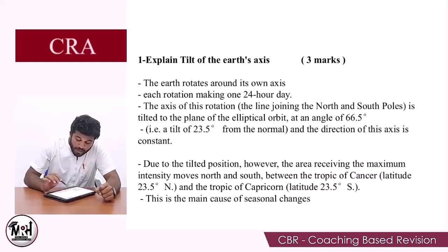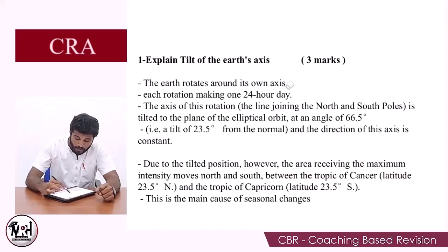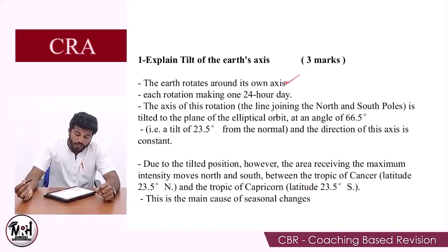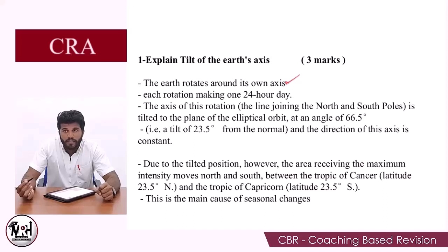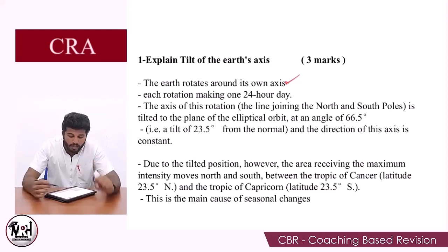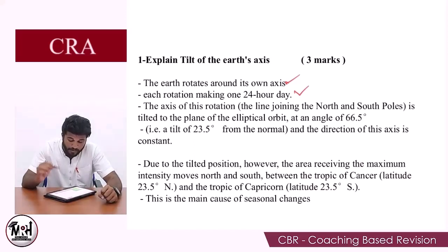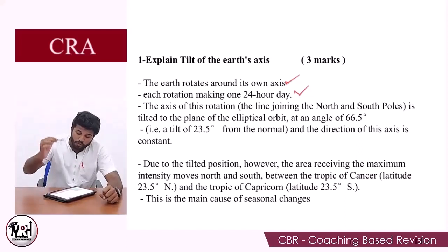The earth rotates around its own axis. Each rotation makes one 24 hours — that is, one rotation is complete in 24 hours. The axis of this rotation is the line that joins the north and south pole.